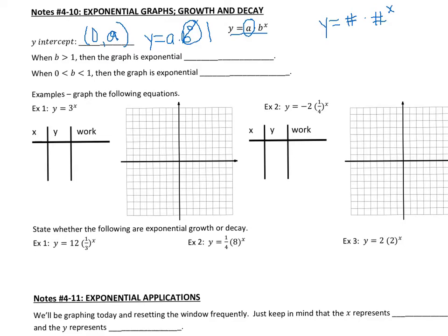Now when is it going to be exponential growth, and when is it going to be exponential decay? Well that is all based off of the letter b, right here. Whatever this number is, if b is greater than 1, then we say that the graph is exponential growth.